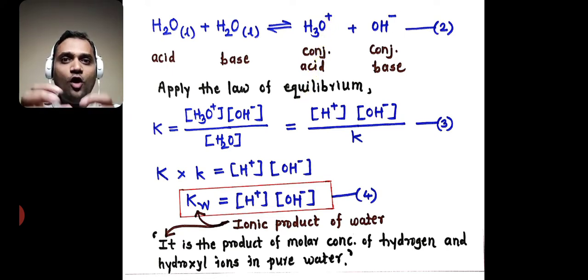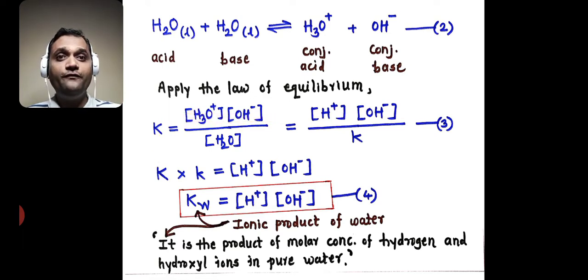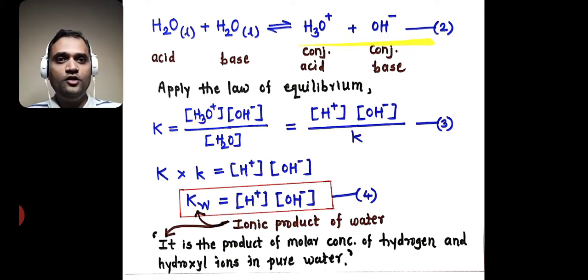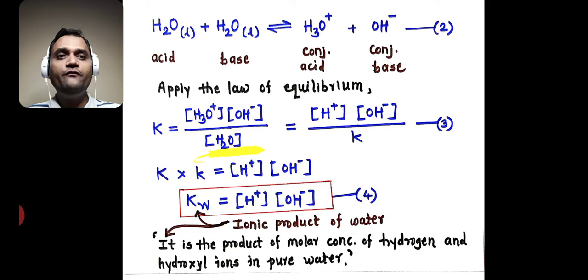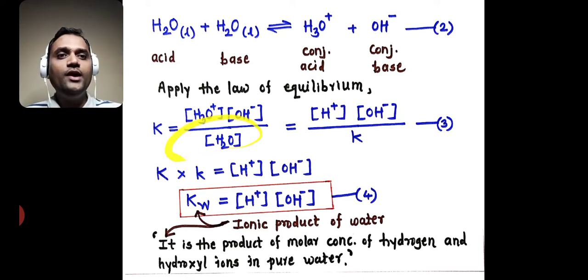Now we have to apply the law of equilibrium to this reaction. The equilibrium constant K is equal to the molar concentration of products divided by molar concentration of reactants. These two are our products. Here we have only one reactant, that is water. Though we have written two water molecules, there is only one water molecule, therefore we write only one H2O here.